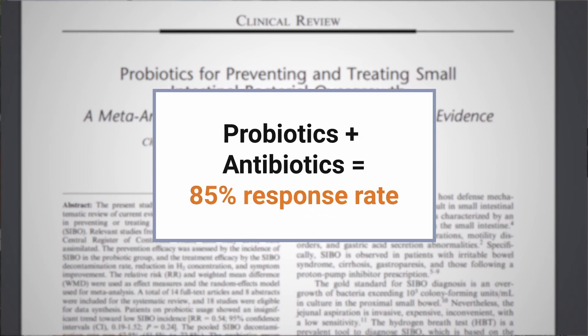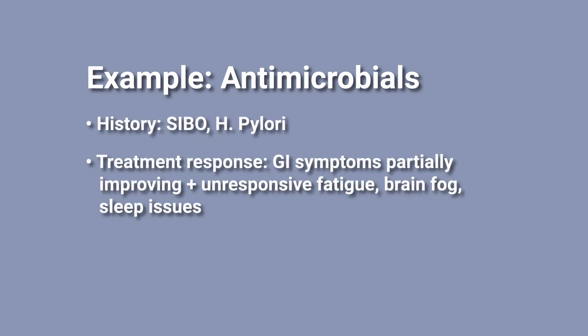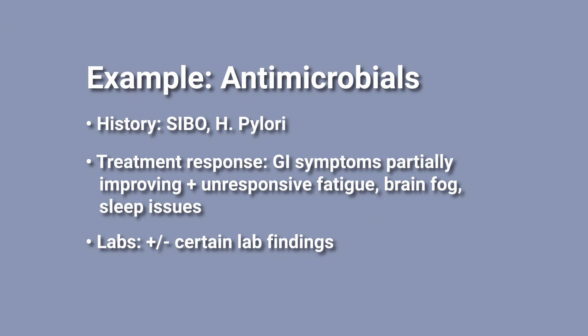Antimicrobial therapy is oftentimes something that's thrown out to people far too quickly. We discussed in our last video how the response rate to the antimicrobial rifaximin goes from about 50% to about 85% when you use probiotics plus the antibiotic. So it's all the more reason why we work down the core and then determine whether we go to the branch of antimicrobials or antibiotics. Historical data such as a history of SIBO or H. pylori, combined with treatment response of partially improving GI symptoms but still unresponsive fatigue, brain fog, and sleep issues — plus or minus lab findings like retesting of SIBO or H. pylori — can all be used together to dictate whether we want to go down the branch of antimicrobial therapy.